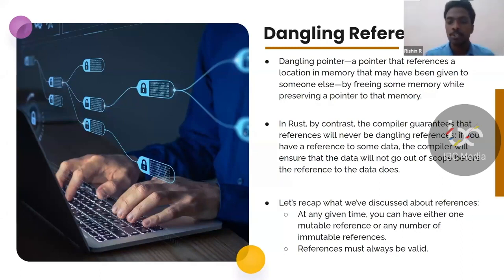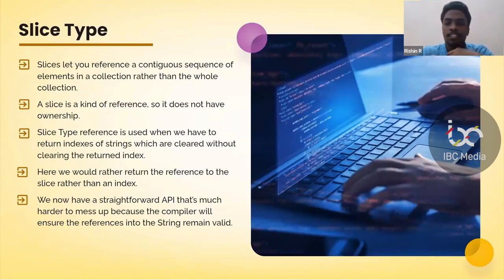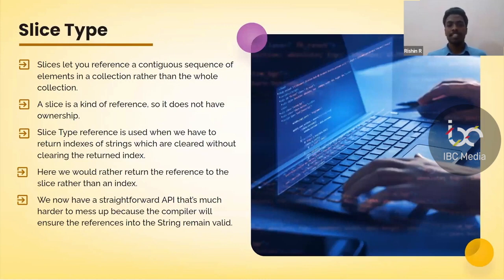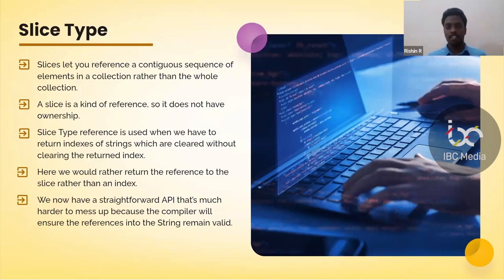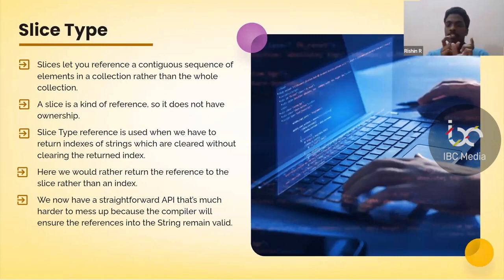What is a slice? Think of a slice of cake — it is basically a subpart of something larger. Slices are references to a contiguous sequence of elements in a collection, rather than the whole collection. It is basically a substring or a subarray. For example, when you have an array from 1 to 10, a slice would be from index 2 to 8. This subpart of the entire structure is called a slice, like cutting a cake and taking a piece.